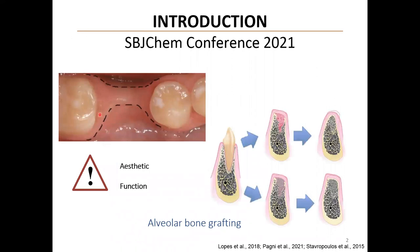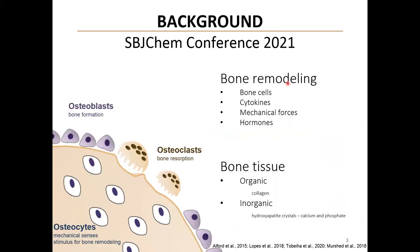Tooth extraction leads to bone loss that affects the aesthetic and function. Therefore, the use of bone graft during the surgical procedure has been investigated in order to favor this process and maintain the volume of the tissue. Bone remodeling involves mainly three cells: osteoclasts, osteoblasts, and osteocytes, that are regulated by local and systemic signals. The bone new formation starts with the deposition of collagen fibrils by osteoblasts, followed by the precipitation of ions of calcium and phosphate, forming the hydroxyapatite crystals. This process requires normalized levels of these minerals in blood.